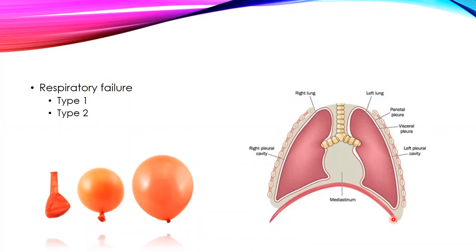Lower down is the diaphragm, which is a major inspiratory muscle. Inspiration is always an active process whereas expiration is passive. During inspiration, the inspiratory muscles contract — the diaphragm contracts and pulls the lungs down so that the lungs expand in the longitudinal direction and air enters from the mouth or nasal cavity.